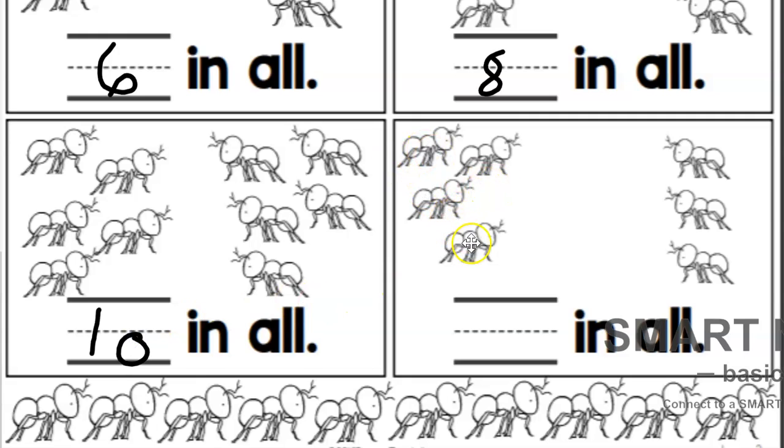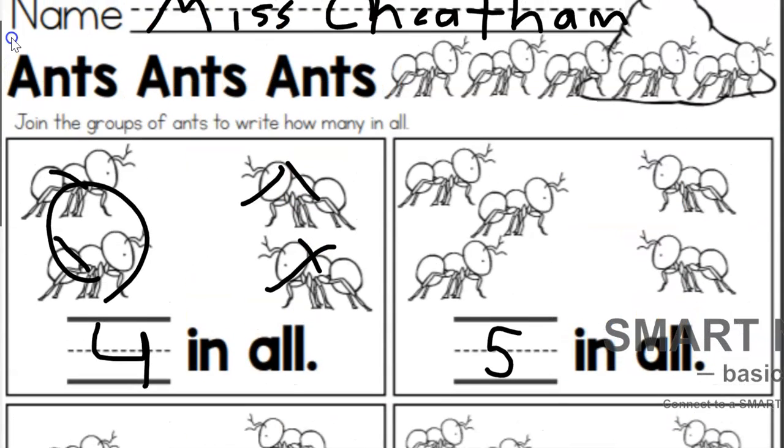There's one, two, three, four ants on that side and one, two, three ants on that side. Landon, how many did you get for this one? Good job, there are seven ants in all. You guys did awesome on that. Double check your work and that is all done.